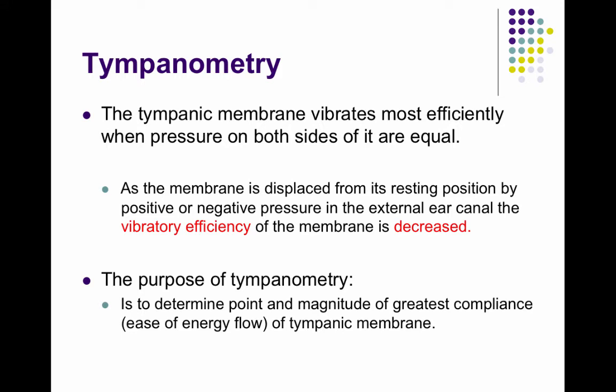Back to tympanometry. The tympanic membrane vibrates most efficiently when the pressure on both sides of it are equal — when the air pressure in your ear canal is the same as in your middle ear space. As the tympanic membrane is displaced from resting position by either a positive or negative pressure put in through the ear canal by the pump, the vibratory efficiency of the membrane is decreased. The purpose of tympanometry is to determine the point and the magnitude of greatest compliance, or greatest ease of energy flow, of the tympanic membrane.